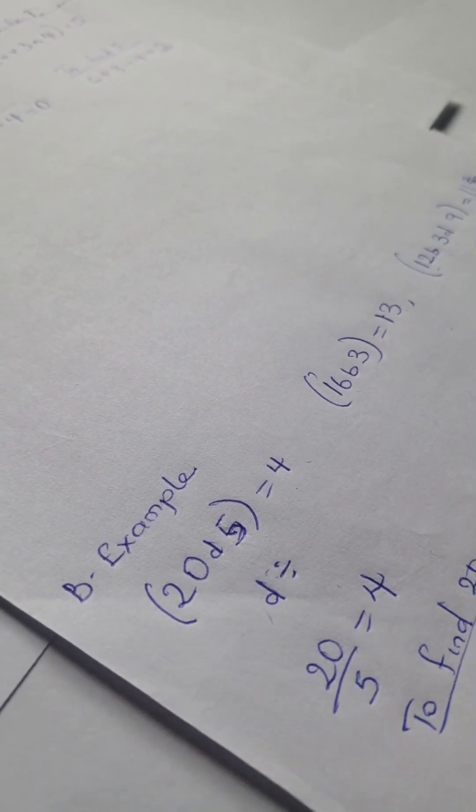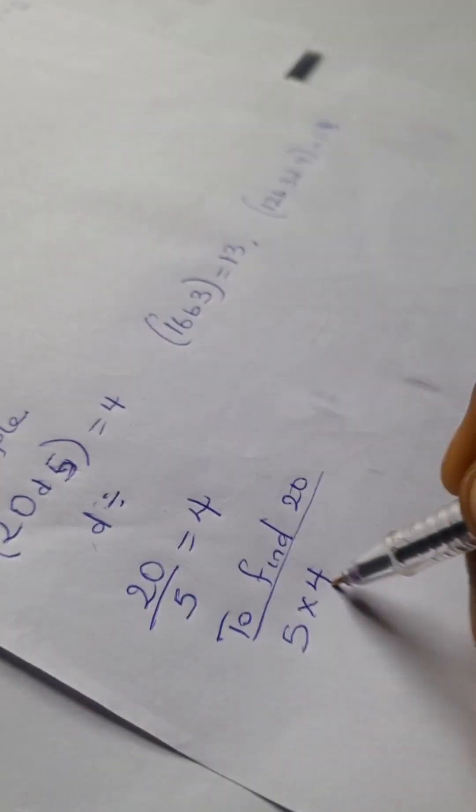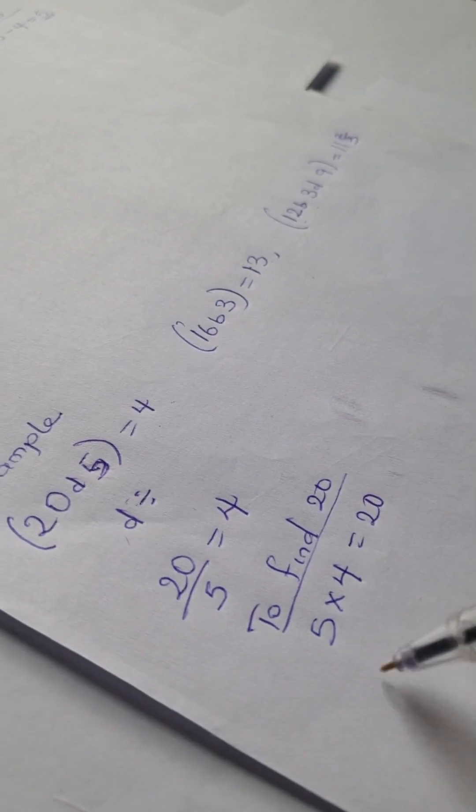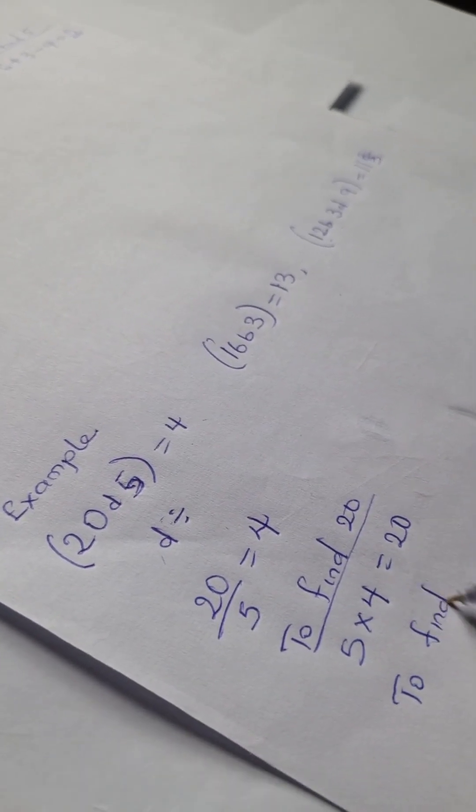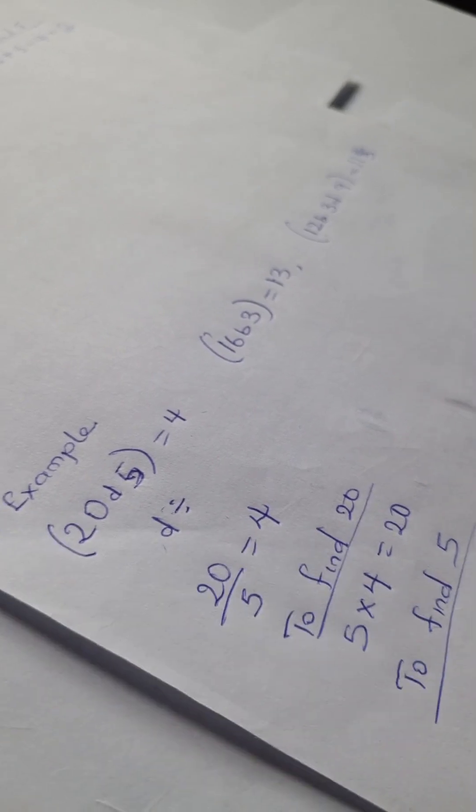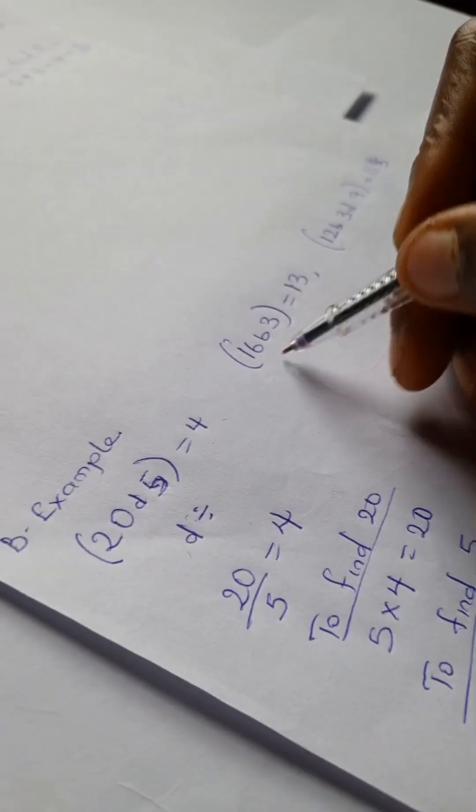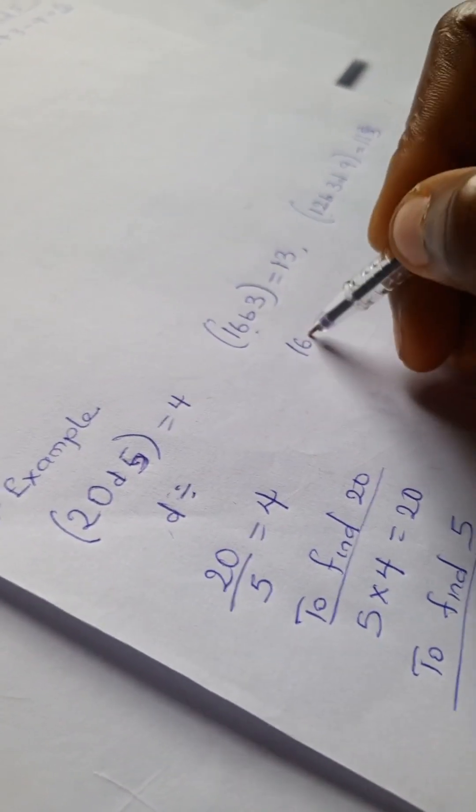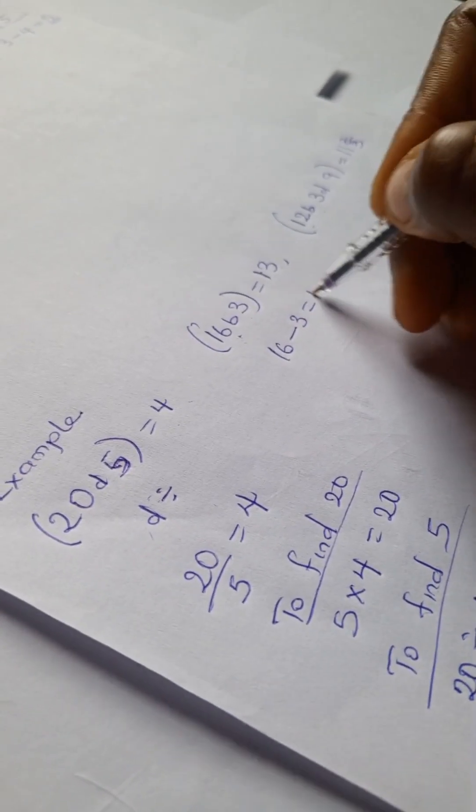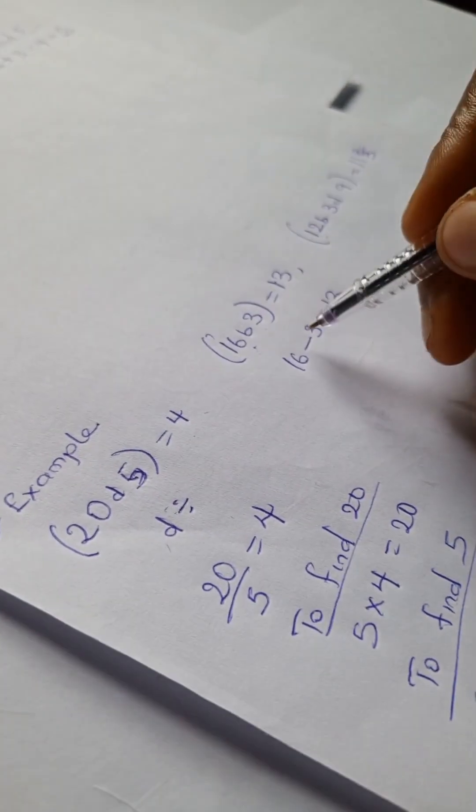And to find 20, you have 5 times 4 is 20. And to find 5, we have 20 divided by 4 is 5.